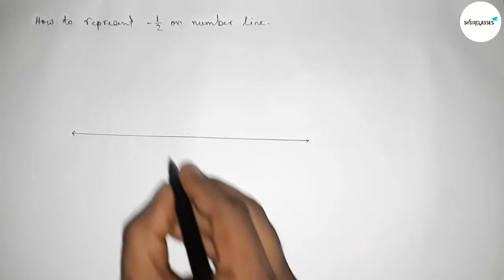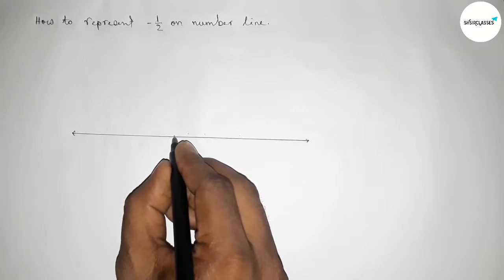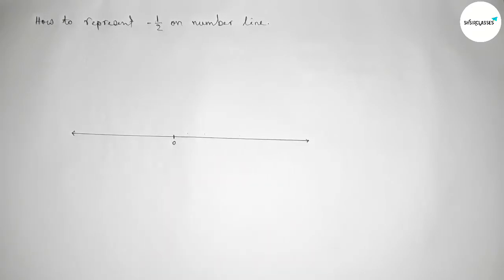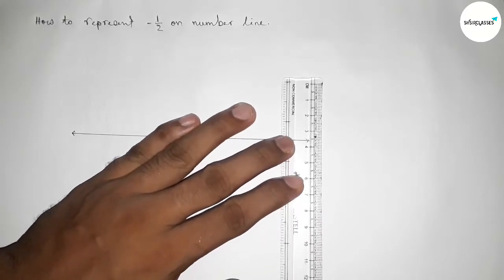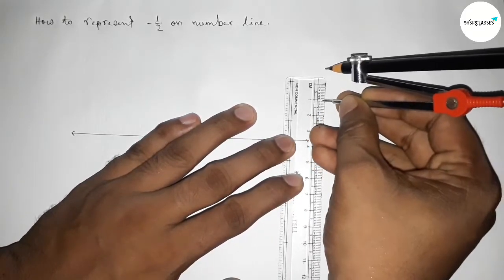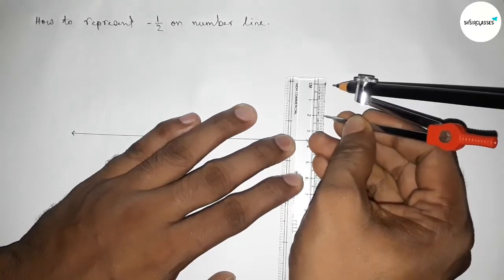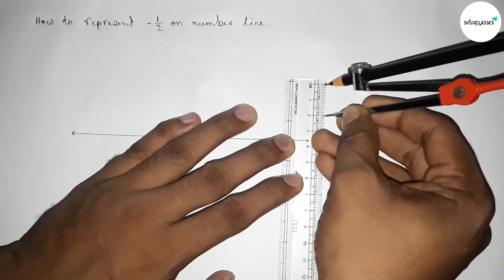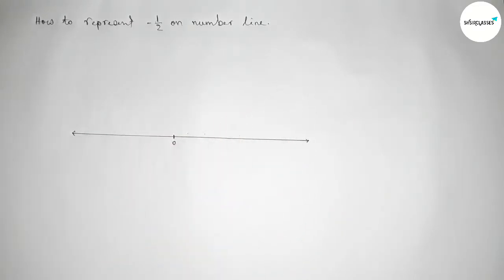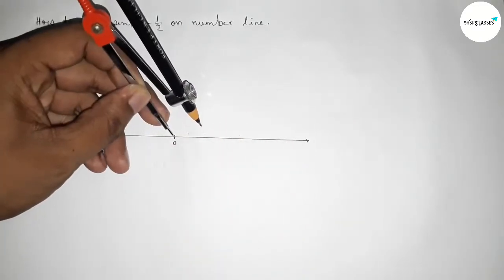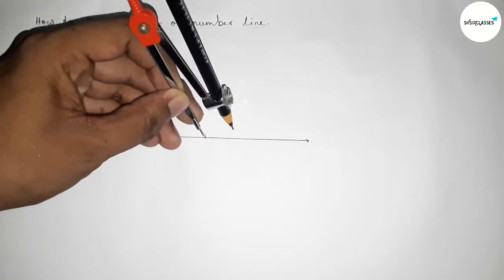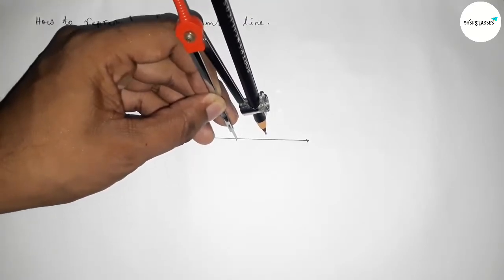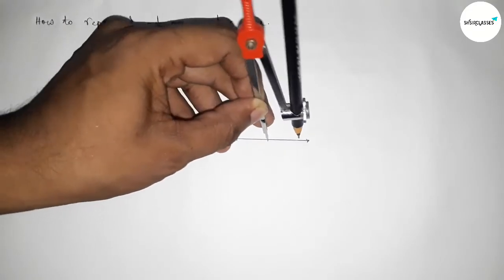Now first, taking here starting number here, zero. Next we have to take a length by using scale. So here I'm taking two centimeters as one unit length by using compass. Taking two centimeters and putting the compass on the point here and cut here and cut here.